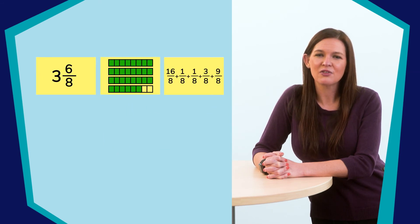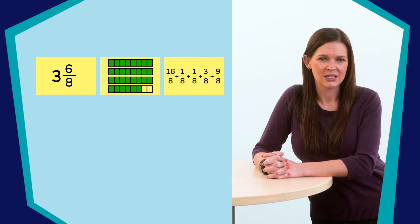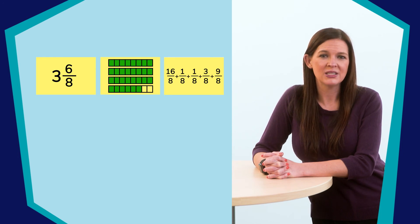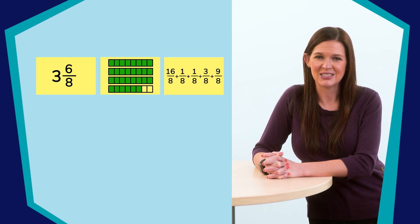It looks like the first part is sixteen-eighths. That means I have more pieces than are in a whole. Looking at the model, I know that one whole piece is eight, so two wholes would be sixteen pieces. So, the first part is two.